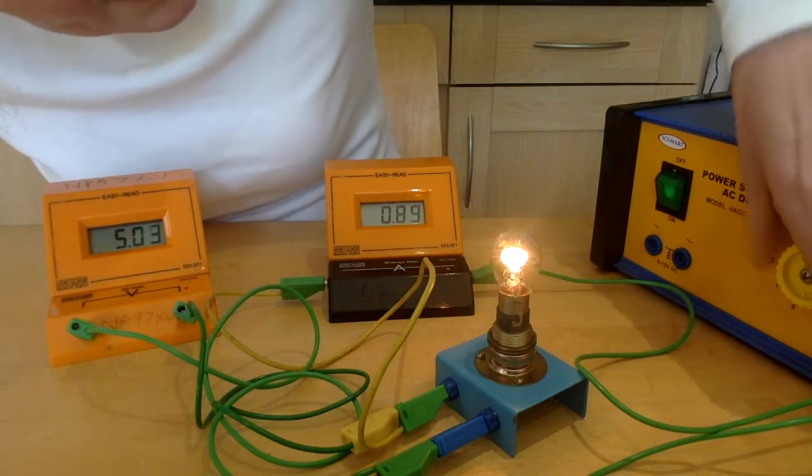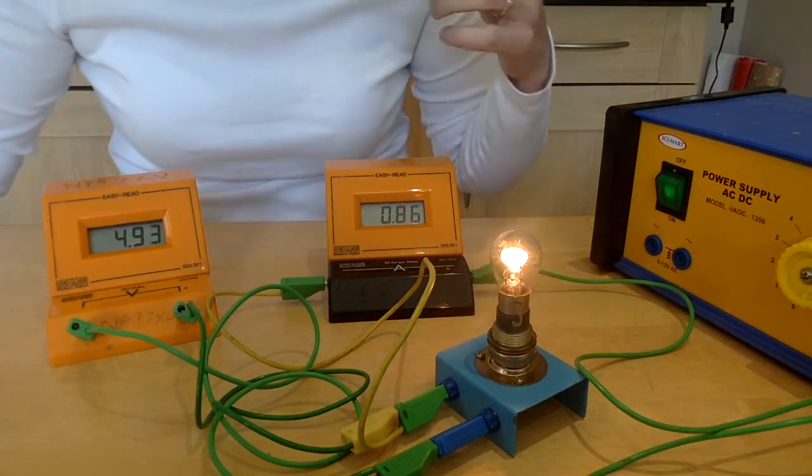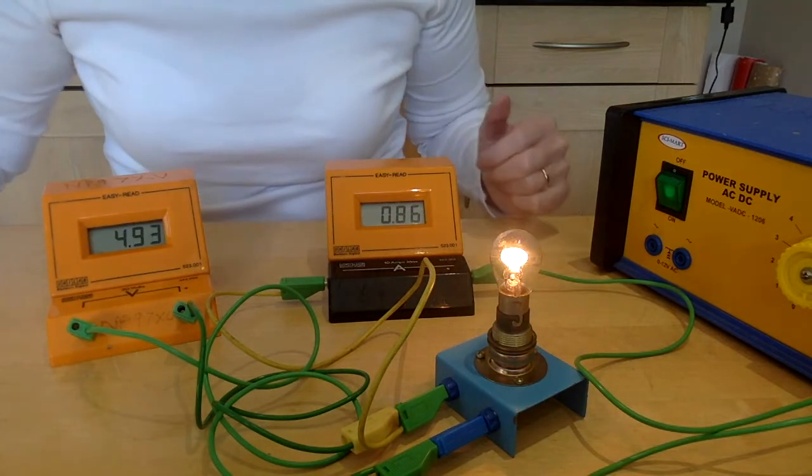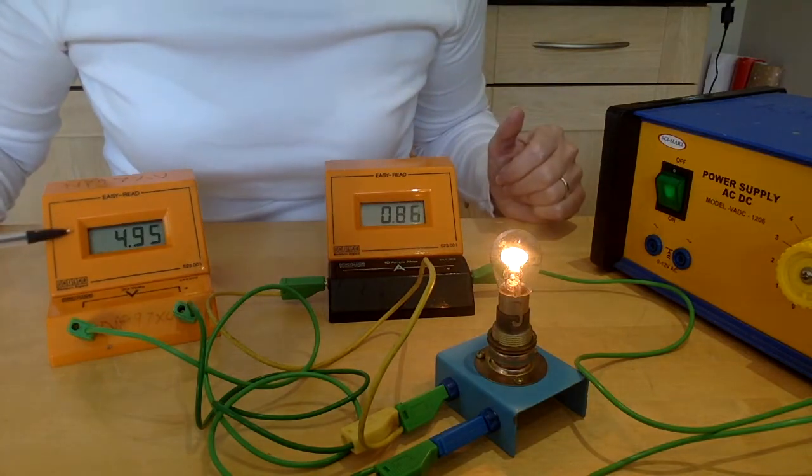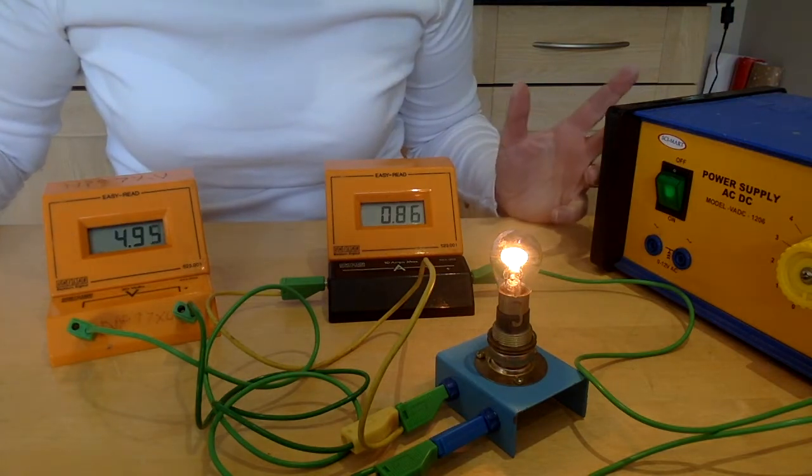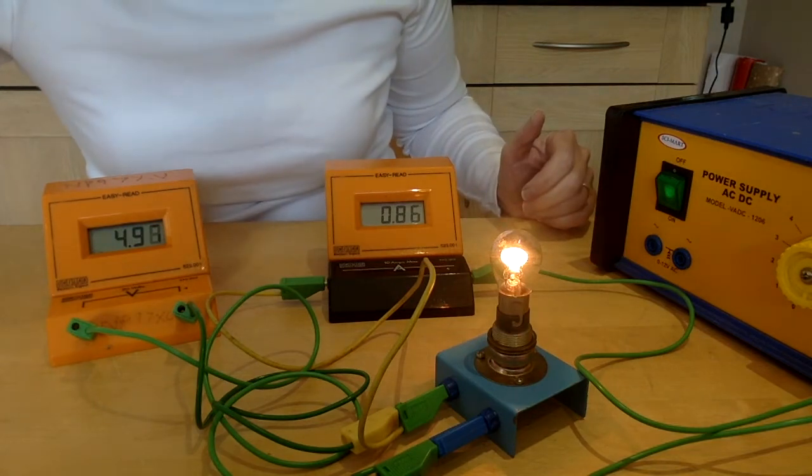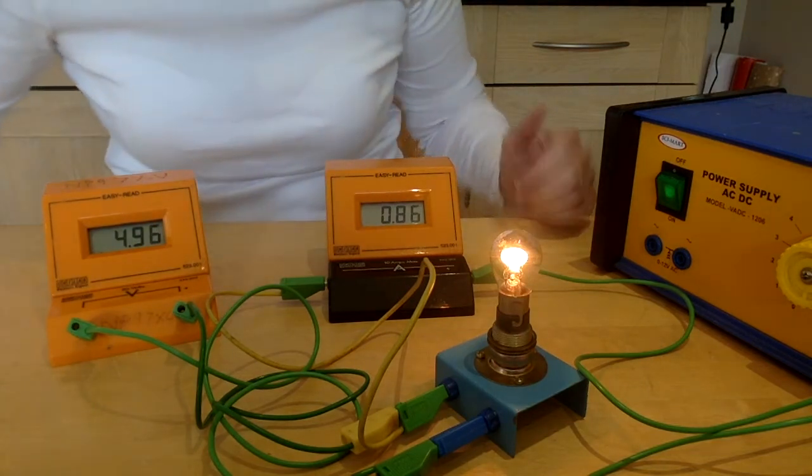Third setting - so you can see that the bulb is getting brighter, the flow of current is increasing. Now we've got 4.93, 4.95 let's go for voltage and 0.86 current.